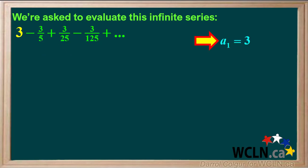We see that a1 equals 3 and r equals negative 3 fifths over 3, which is negative 1 fifth.